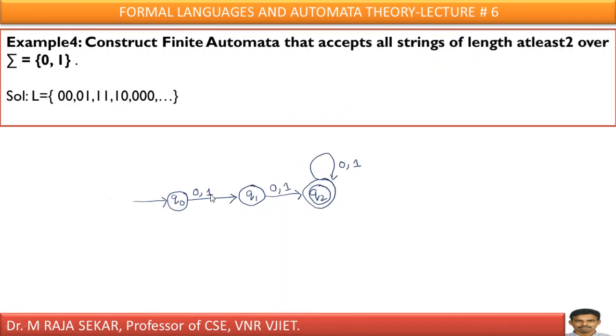Now, example 4, what it says? Construct finite automata that accepts all strings of length at least 2. At least 2 means 2 or more. At least 2 means what? 2 or more, means 2 length strings, 0 0.